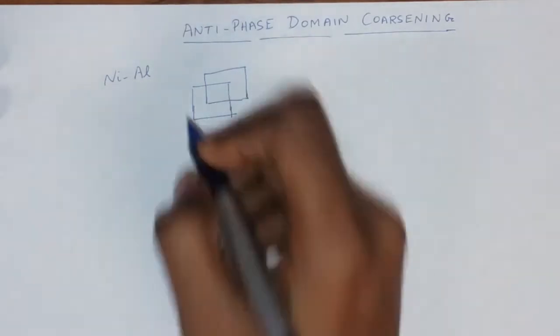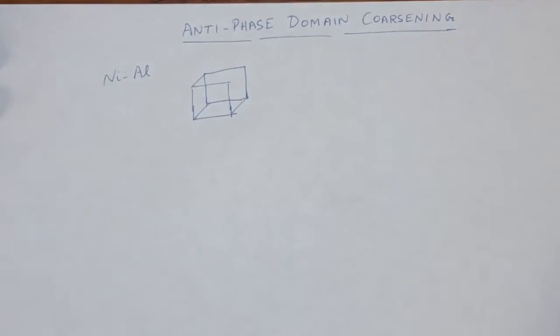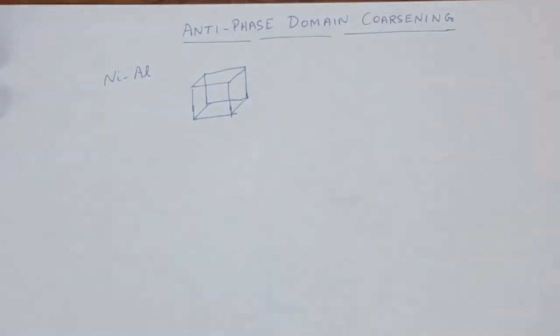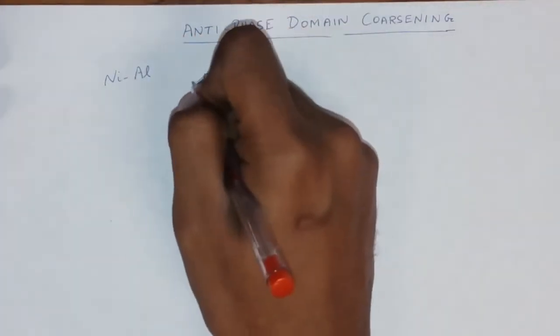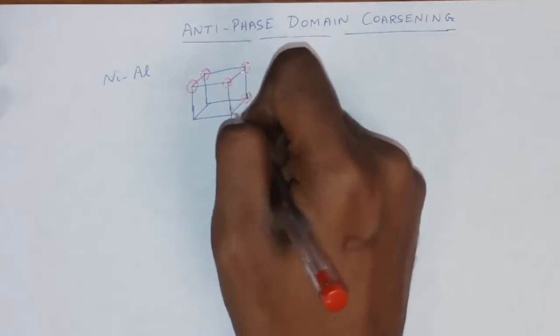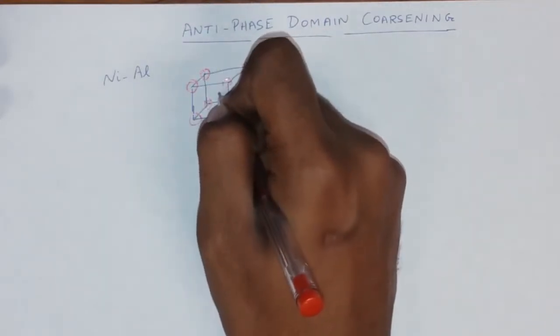So let me draw it out here. So we have a unit cell and this unit cell is composed of aluminium atoms at the corners and a nickel atom in the body centre.